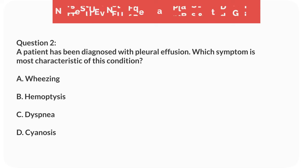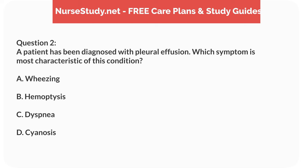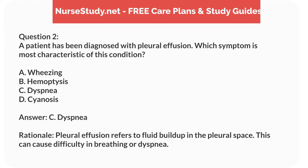Question 2. A patient has been diagnosed with pleural effusion. Which symptom is most characteristic of this condition? A. Wheezing. B. Hemoptysis. C. Dyspnea. D. Cyanosis. Answer: C. Dyspnea. Rationale: Pleural effusion refers to fluid buildup in the pleural space. This can cause difficulty in breathing, or dyspnea.